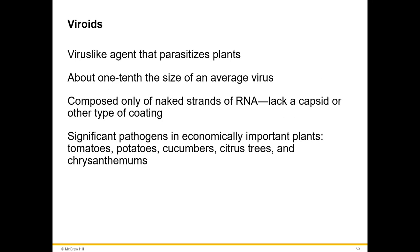Viroids are virus-like agents that parasitize plants. They are only RNA — just a piece of RNA that infects plants. Significant pathogens affect economically important plants including tomatoes, potatoes, cucumbers, citrus trees, and chrysanthemums.